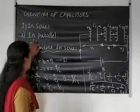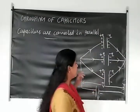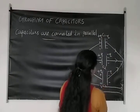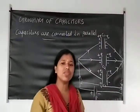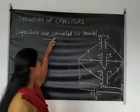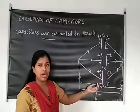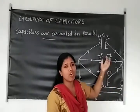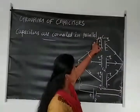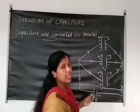Next is the second topic — capacitors in parallel. Consider three capacitors C1, C2, C3 connected in parallel. When capacitors are connected in parallel, the voltage or potential difference across each capacitor is the same. Each capacitor has plus Q on one side and minus Q on the other side.